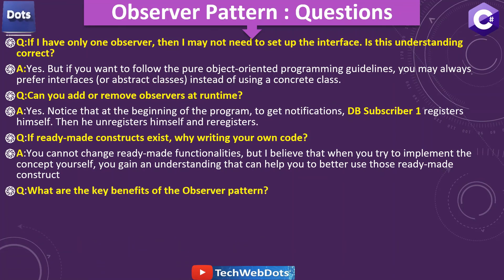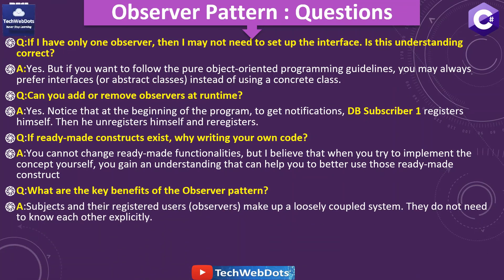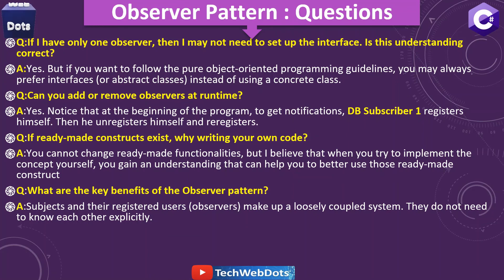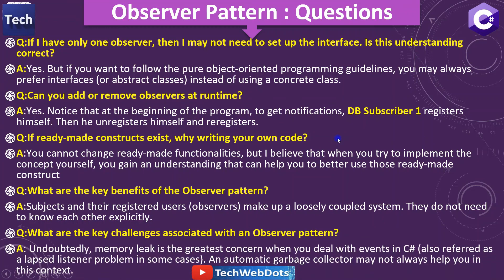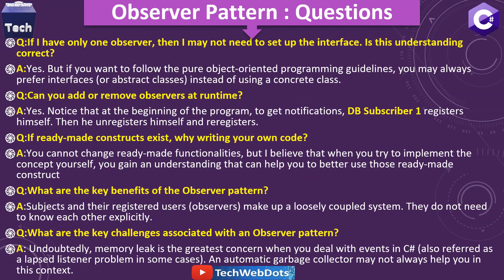What are the key benefits of the observer pattern? The main benefit is that subjects and their registered observers form a loosely coupled system — they do not need to know each other explicitly, as no hard-coded class names are used. What are the key challenges? Undoubtedly, memory leak is the greatest concern when dealing with events in C#, also referred to as the 'lapsed listener problem.' An automatic garbage collector may not always help in this context.